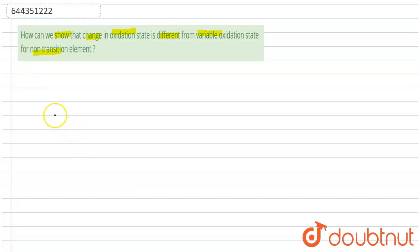Explain this. We know that non-transition metals or elements show variable oxidation state, that means more than one oxidation state.